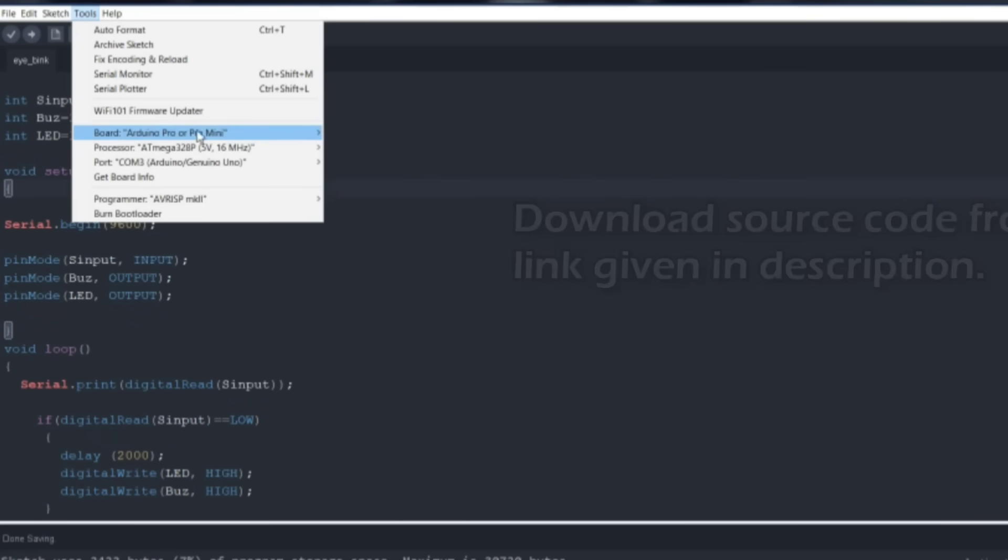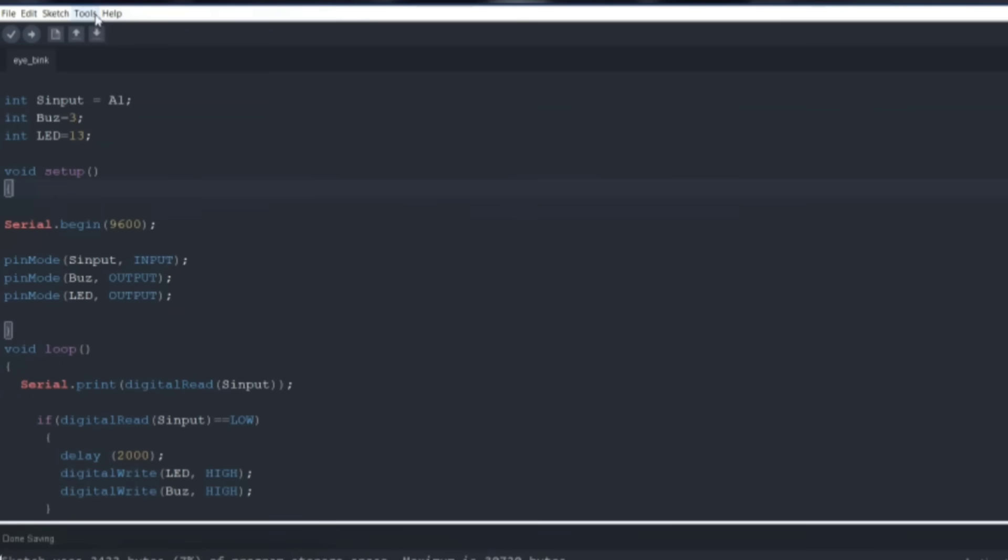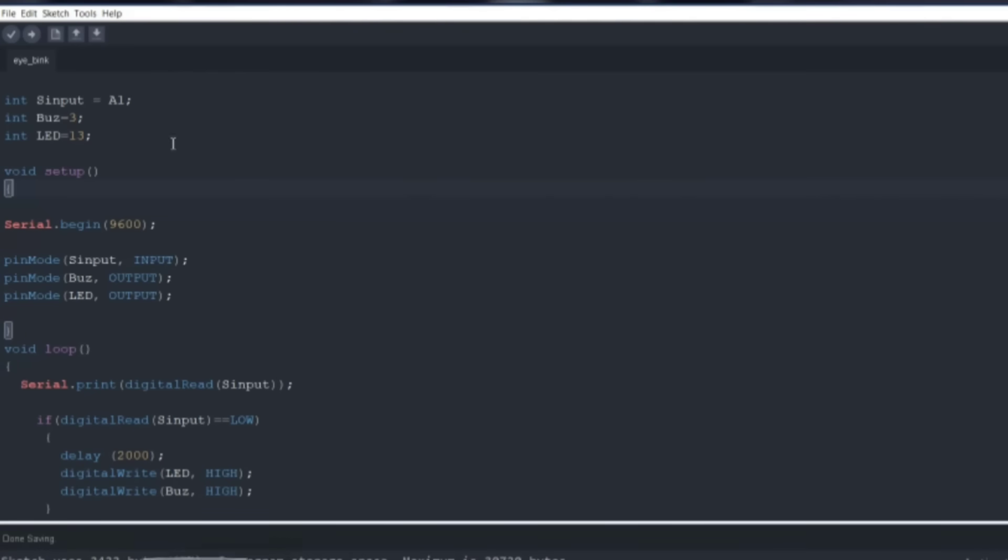You can easily download the same code, it's available in the video description below. Just upload it using the Arduino IDE, and your circuit will be fully functional. With that, the entire setup from component placement, soldering, wiring, and code uploading will be complete.